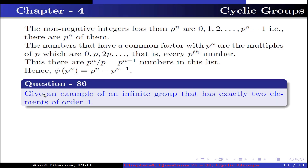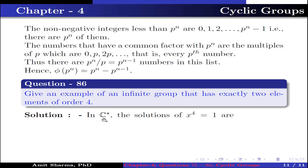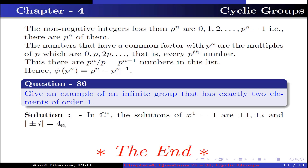Question number 86. Give an example of an infinite group that has exactly two elements of order 4. In C*, the group of non-zero complex numbers under multiplication, the solutions of x⁴ = 1 are ±1 and ±i, and the order of ±i equals 4. Thank you very much for watching my video. If you like the content, please like, share and subscribe to my channel. If you have any query, comment below.